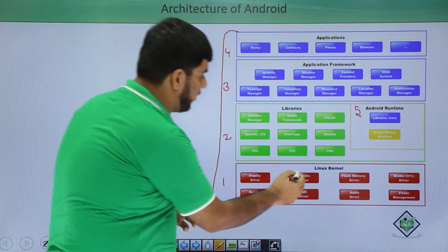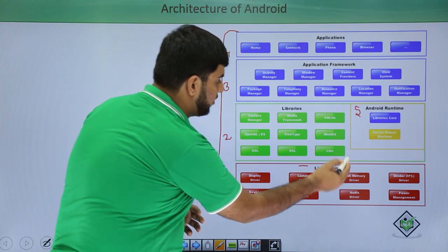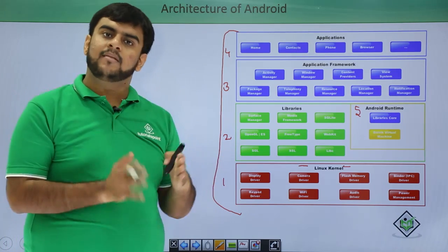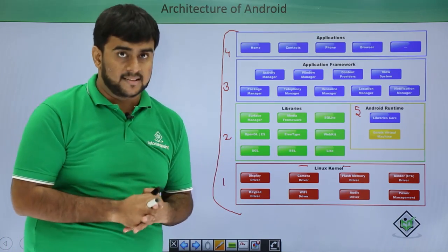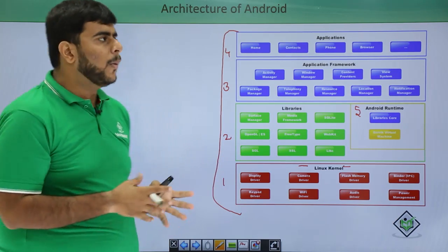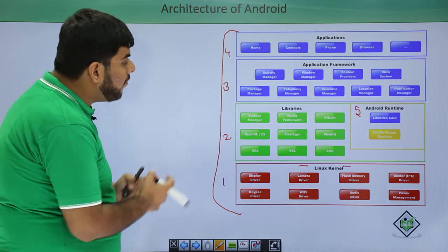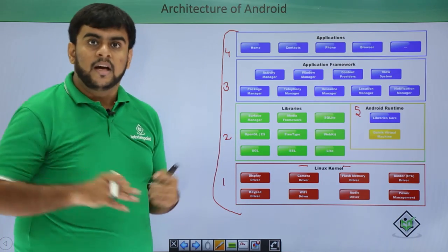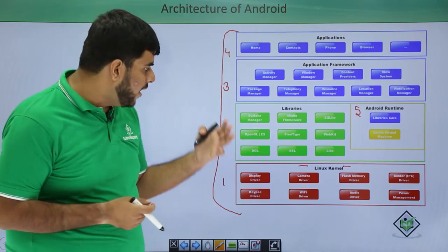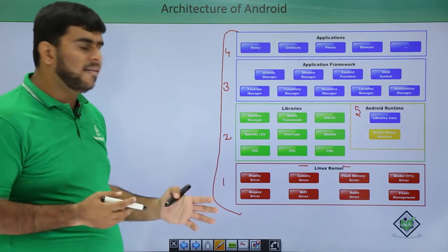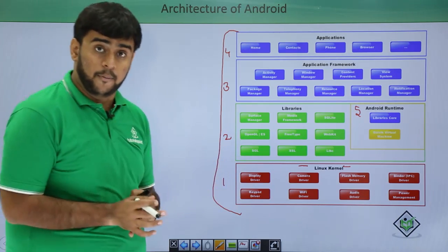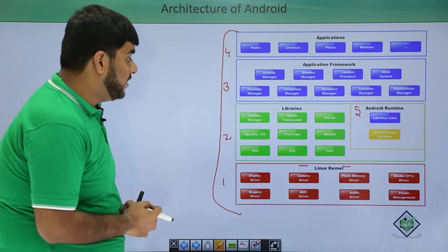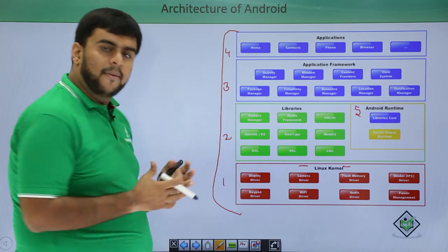The very first or bottom layer of Android is the Linux kernel. We have always heard that Android is based on Linux — by that we mean the kernel of Android is the Linux kernel. The main work of the kernel is to get work done from hardware. Hardware can be anything: your display, your camera, your Wi-Fi — anything can be hardware.